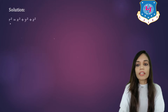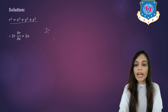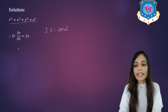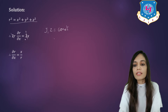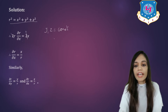Now let us begin with the solution. We are given r square is equal to x square plus y square plus z square. Firstly, we will find the derivative of r with respect to x, keeping y and z constant. So 2r del r by del x is equal to 2x, which gives us del r by del x equal to x by r. Similarly, del r by del y is equal to y by r and del r by del z is equal to z by r.